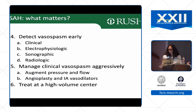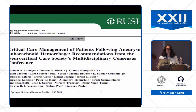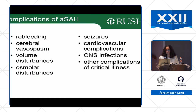Detect vasospasm — clinically, electrophysiologically, sonographically, or radiologically — and manage it. Also treat subarachnoid hemorrhage in high-volume centers, and we'll talk about why. Guidelines have been established by the American Heart Association and the Neurocritical Care Society as a consensus statement. The early complications to be concerned about are re-bleeding most importantly, followed by vasospasm, and everything else we'll be going through.